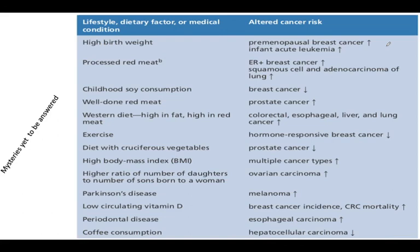There are still certain mysteries yet to be answered. For example, high birth weight has some correlation with premenopausal breast cancer risk, and infant leukemia carries increased risk. These are informational points — not strictly biology — but they serve as a reminder to keep an eye on all the factors that can constitute a cancer risk.